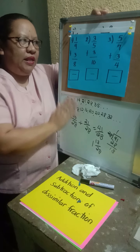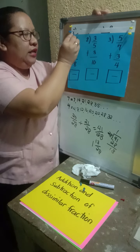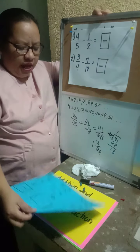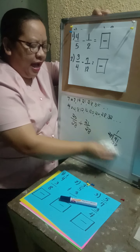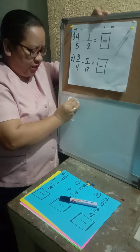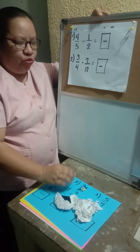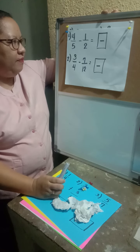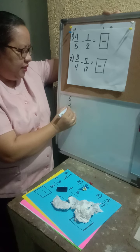Any questions on addition of dissimilar fractions? Let's move on to subtraction of dissimilar fractions. What is the difference between addition and subtraction? The steps are the same — the only difference is that instead of adding, you subtract. The rules are the same.